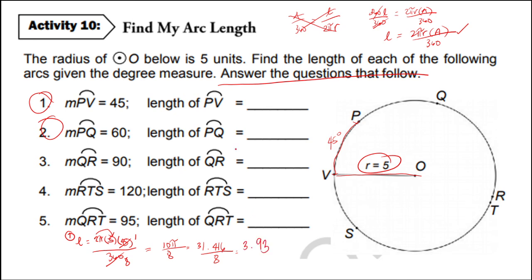And that is equivalent to 3.93. And do not forget, the unit of measure is none. But it is stated in the instruction that the given radius is 5 units. So approximately, the arc length of arc PV is 3.93 units.